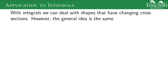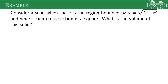This actually applies to integrals as well. If we have a shape with the same cross-sections throughout, we use the area formula for that cross-section and multiply it by the length, which ends up being an integral. Let's look at an example: there's a solid whose base is the region bounded by the square root of 4 minus x squared. If you graph that, you get a semicircle.